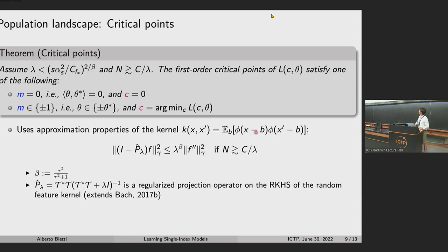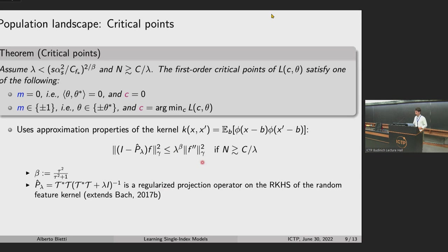The mechanism relies on studying approximation properties of the random feature kernel. The projection P-hat-lambda onto the random feature space can be made close to any target function, with approximation error scaling with lambda. We assume F-star has a finite second derivative in the Gaussian norm. When lambda is small enough, the approximation term in the critical point equation becomes negligible for M strictly less than one, and you end up with only the correct critical points.